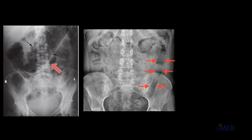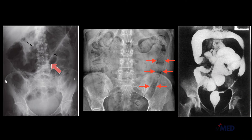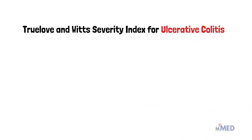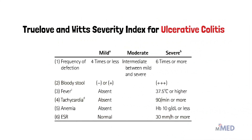In more severe chronic cases, a benign stricture in the transverse colon can be seen. The Truelove and Witts severity index categorizes ulcerative colitis as mild, moderate, or severe based on frequency of defecation, presence of bloody stools, fever, tachycardia, and anemia. It is classified as severe ulcerative colitis if defecation frequency is 6 or more times per day and fever is 37.5 degrees Celsius or higher.